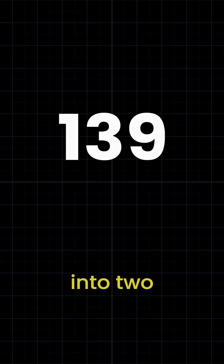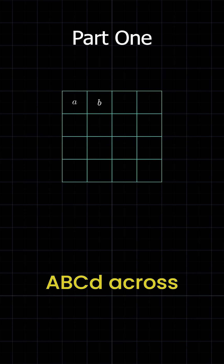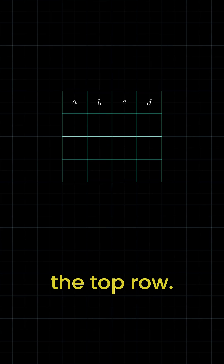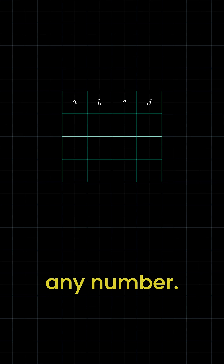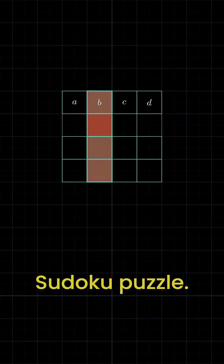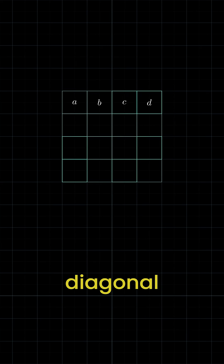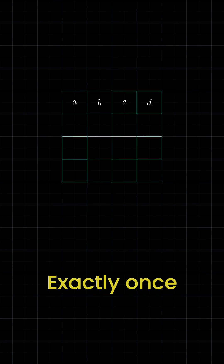Let's break the process into two simple parts. Instead of using the numbers right away, let's use the letters A, B, C, D across the top row. This way we are building a blueprint that works for any number later on. Think of it like a mini Sudoku puzzle — every row, every column, and every diagonal must contain letters A, B, C, D exactly once.